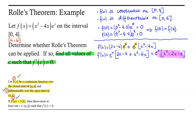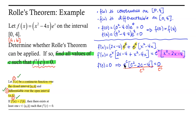Now that we have our derivative in simplified form, we want to find all values of c such that f'(c) = 0. Setting f'(c) = 0 means solving eˣ(c² - 2c - 4) = 0. Since eˣ is never equal to zero, we divide both sides by this non-zero factor, giving us the equation c² - 2c - 4 = 0.